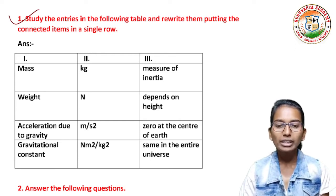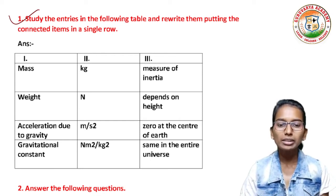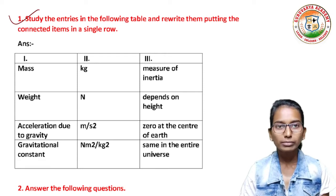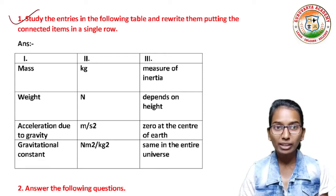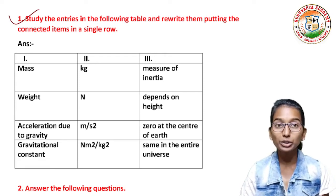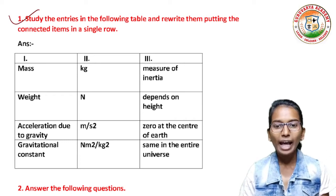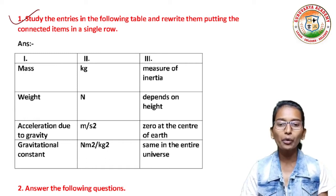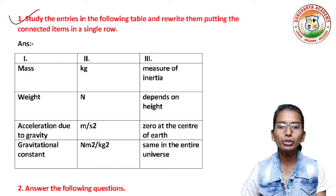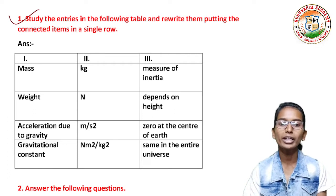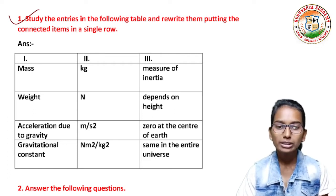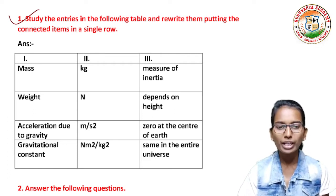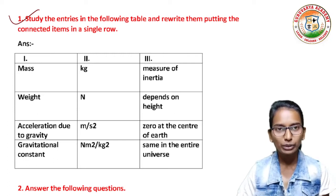Second: weight — unit Newton — third column: it depends on height. Third: acceleration due to gravity — unit meter per second square — zero at the center of the earth. And last: gravitational constant — unit Newton meter square per kilogram square — same in the entire universe.